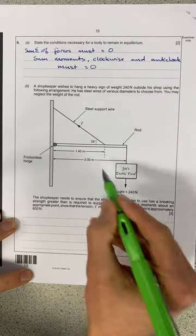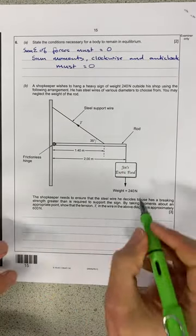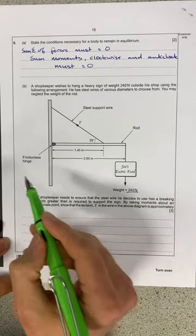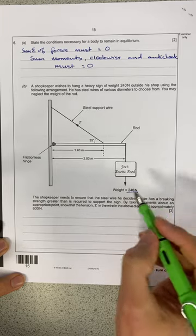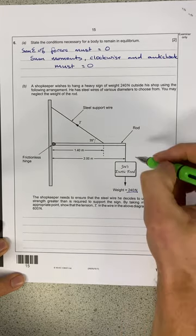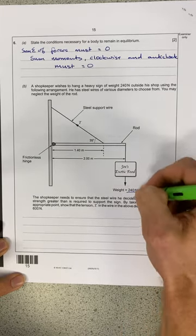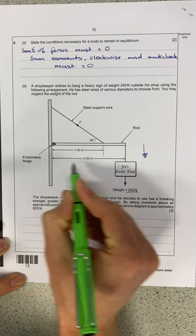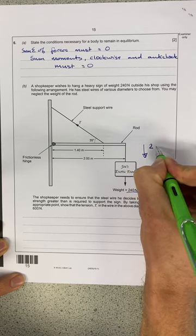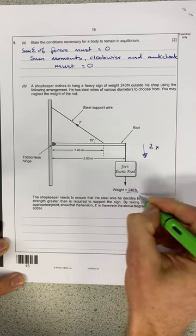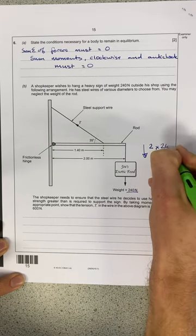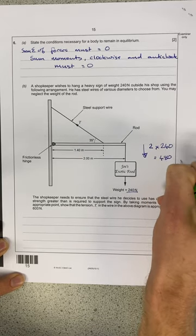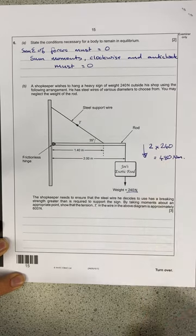What's very helpful is that they've labelled the diagram for us, including the weight down here, which is quite useful. So the first thing I'm going to do is find the moments about this. I'm going to find this clockwise moment over here, and that's going to be equal to the distance, 2, times the force, 240, and that's going to give me a downward moment of 480 newton metres.